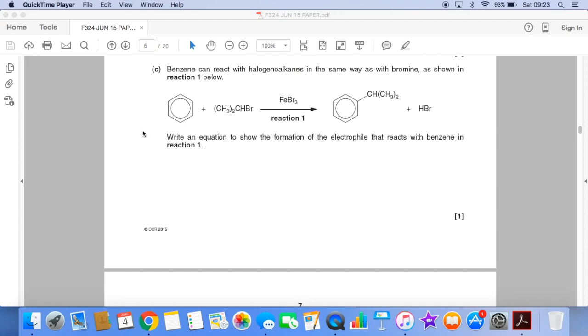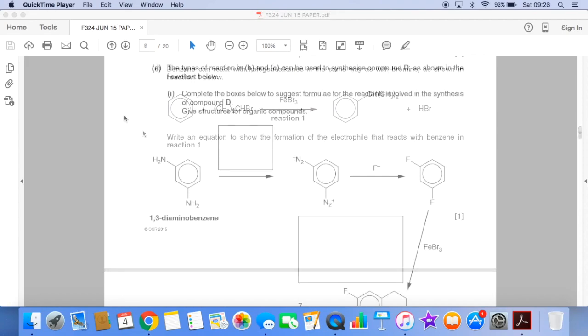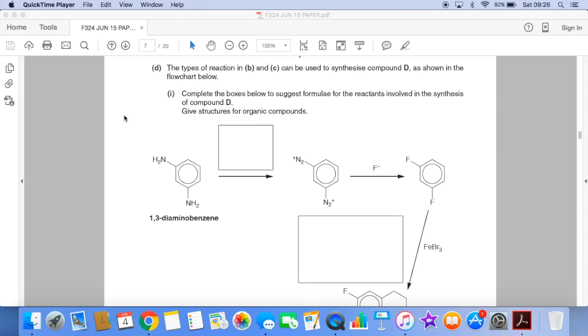We've got to come up with an equation to show the formation of the electrophile. Part D then gets us to use that information that we've learned in B and C, and we have to apply it to this big synthetic route question.